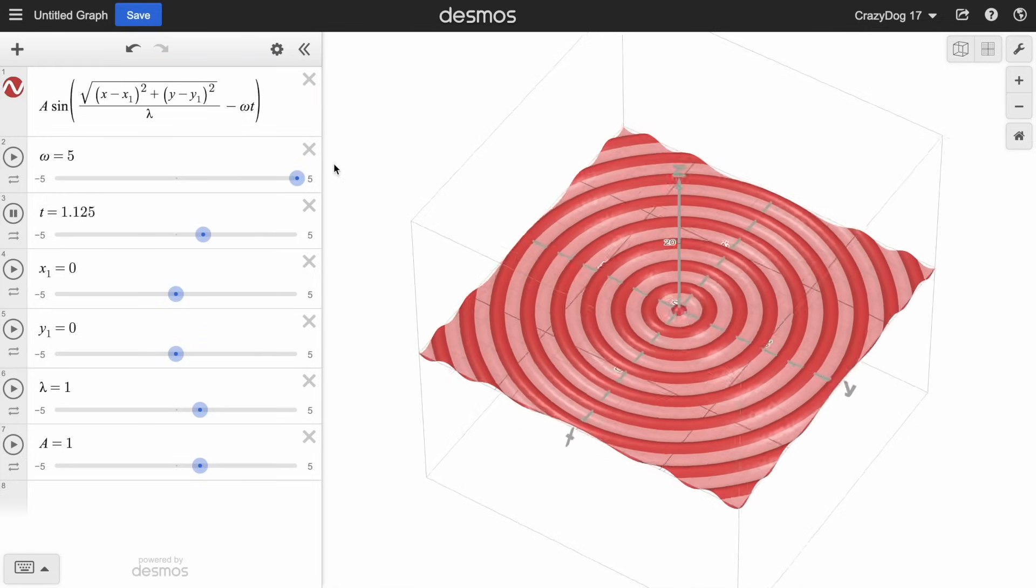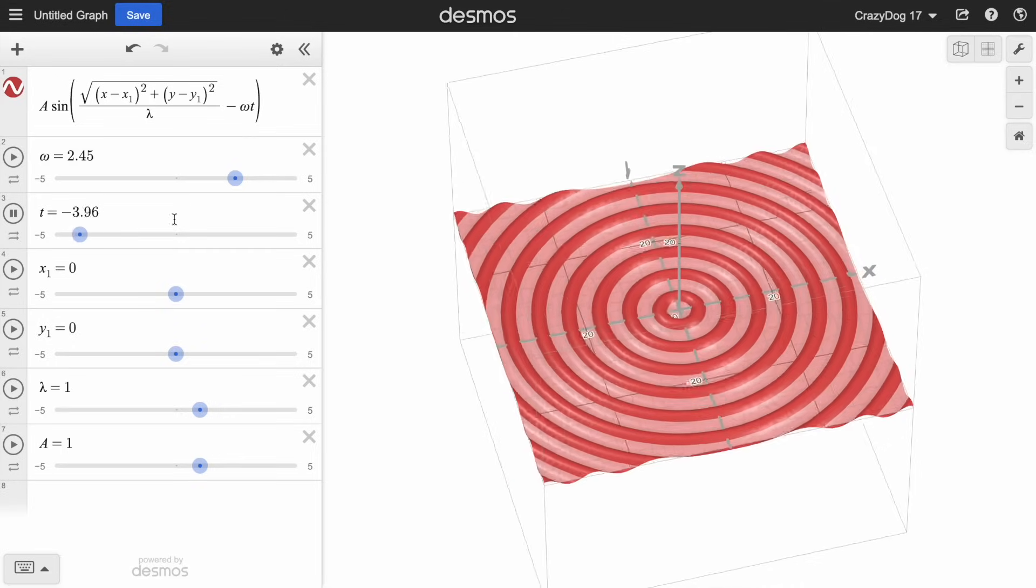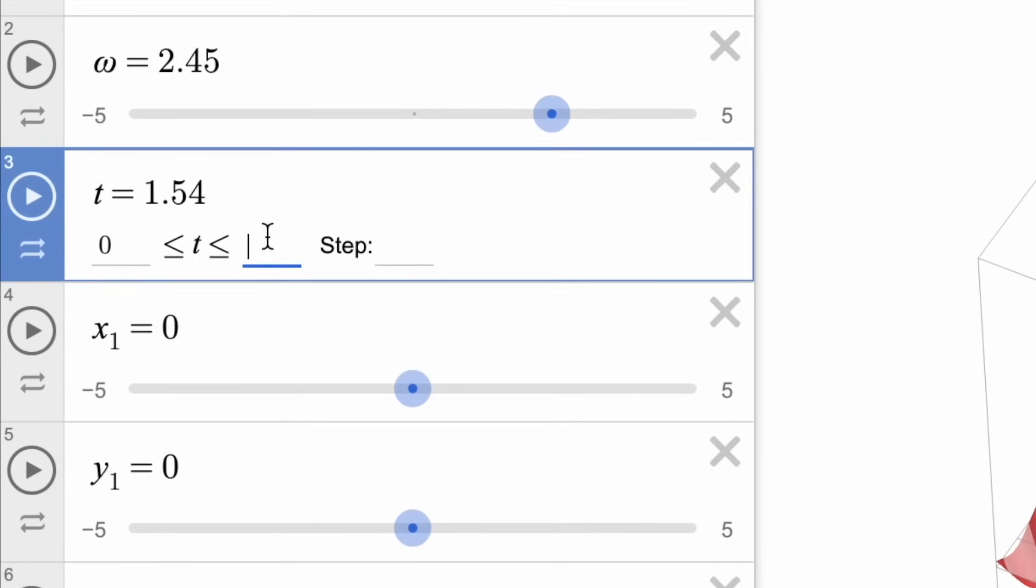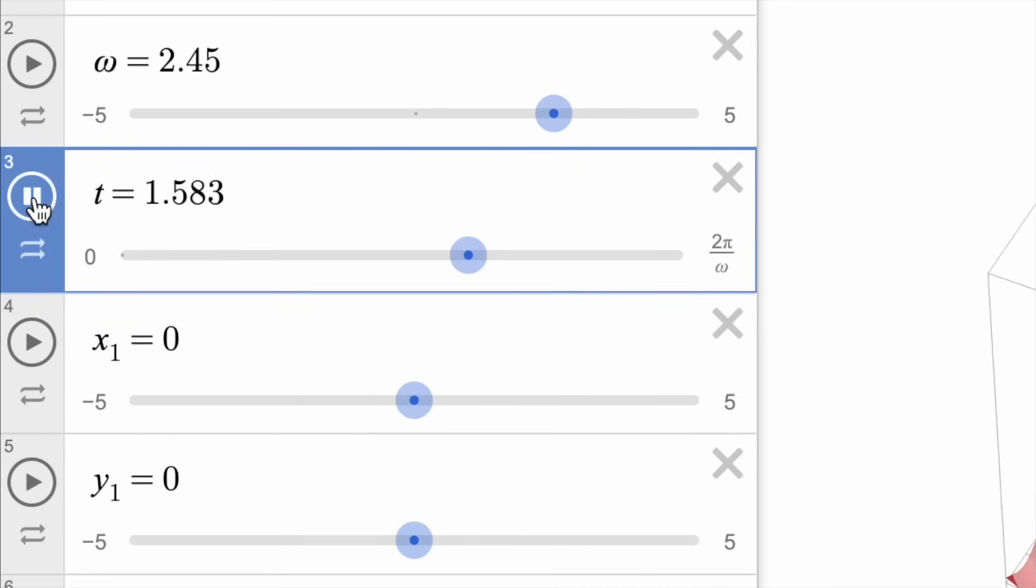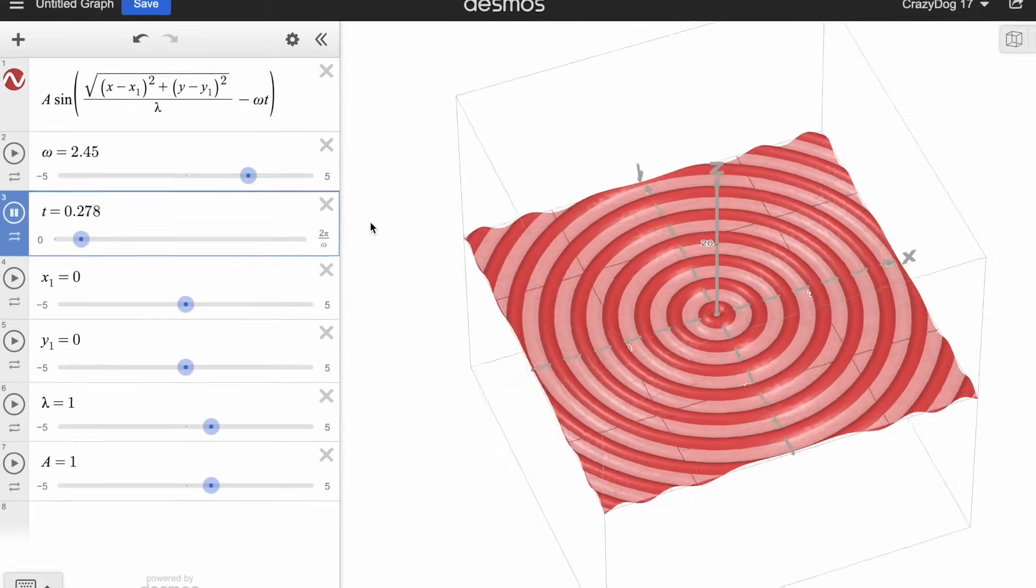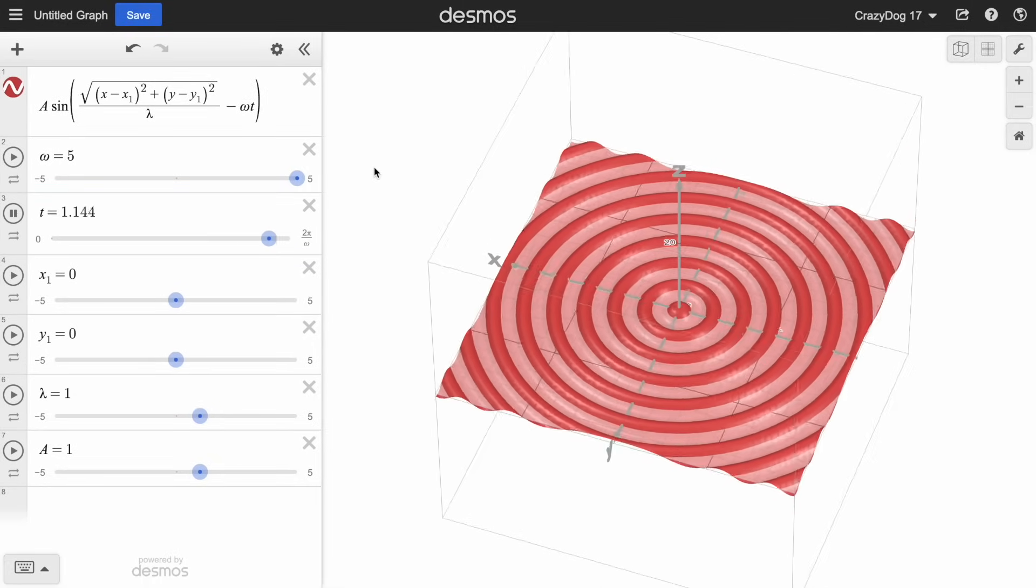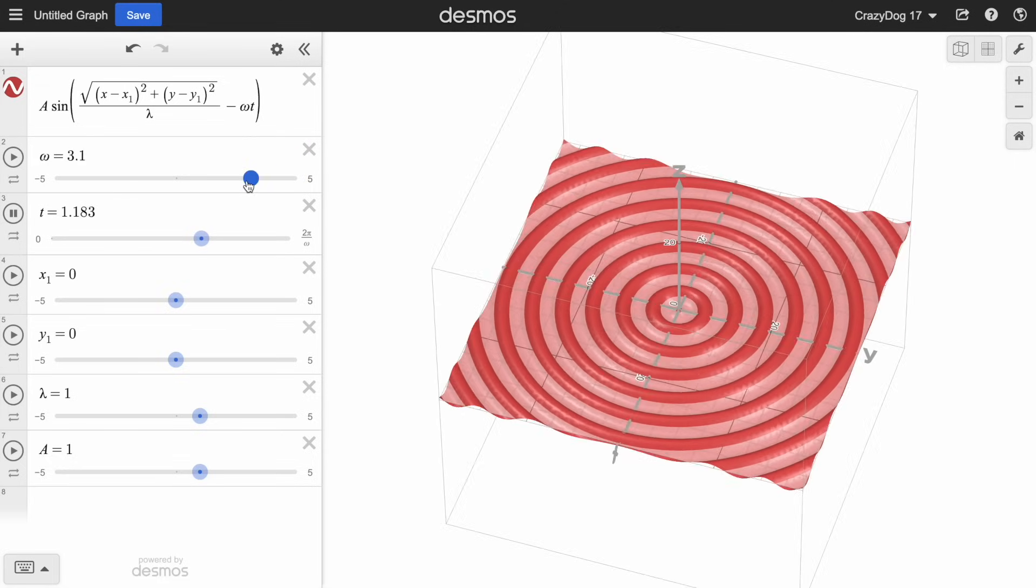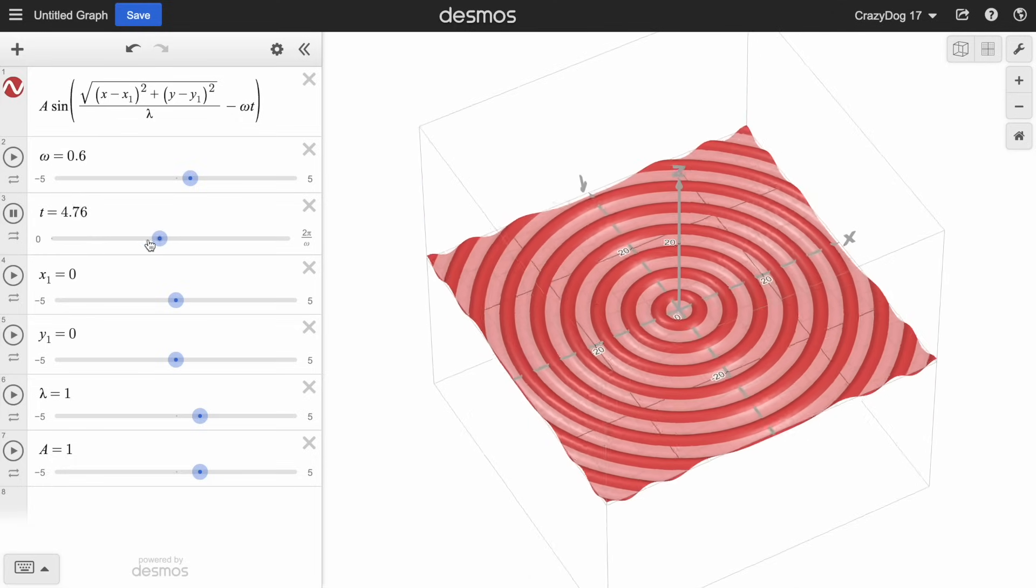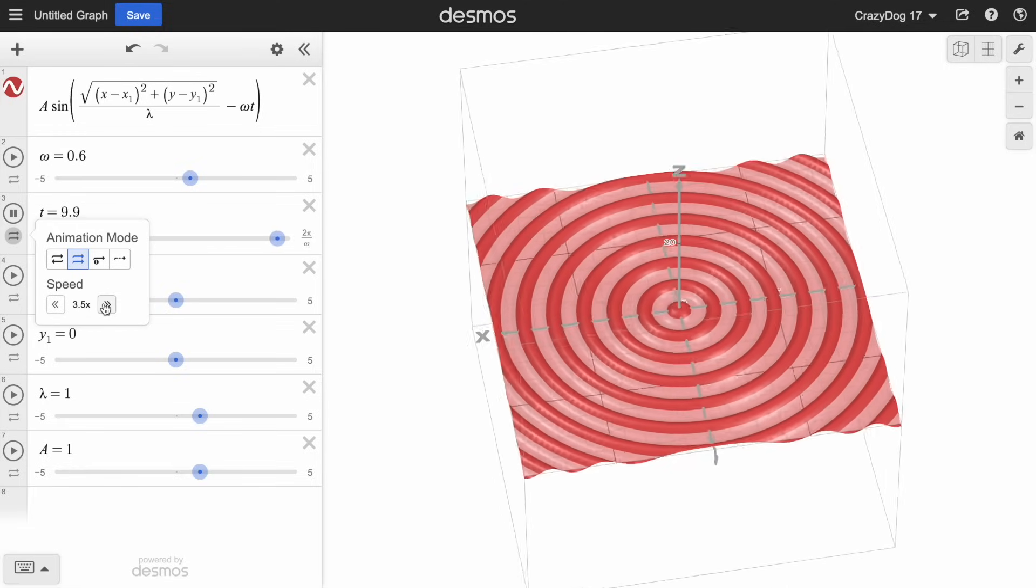We can change the omega, make them propagate faster by increasing it, make them propagate slower by decreasing it, or you could even make it propagate backwards by making it negative. What we're going to want to do next to stop it from being so choppy is make sure that t can only oscillate over one period of the function, from zero to two pi over omega. While the animation isn't as choppy, we unfortunately lose the ability to control the speed of the animation with the omega slider. If you want to make it go faster or slower, you just have to go into the t section and change the animation speed itself.